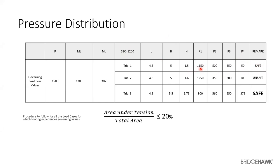Due to the very small margin, we do a reiteration. In trial two, I increased the length to 4.5 m and increased the height by 100 mm, but got a redistributed maximum value of 1250, which exceeded the SBC — making it unsafe. In the third trial, I increased both width and height and got a very decent margin below the SBC, so it was safe and I carried on with it.